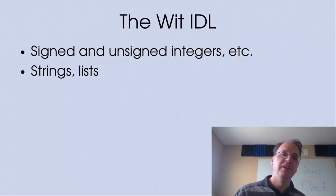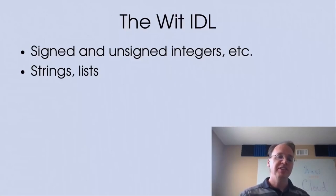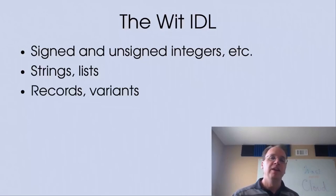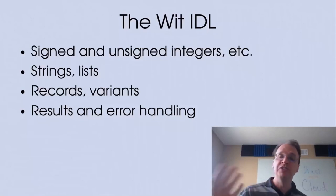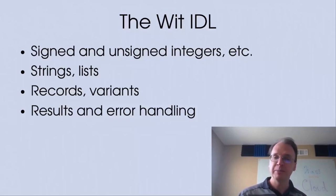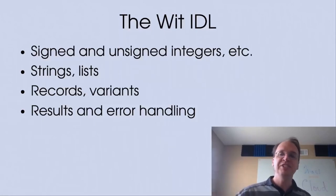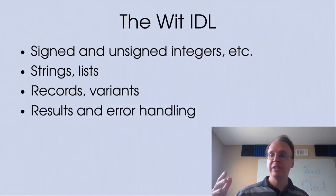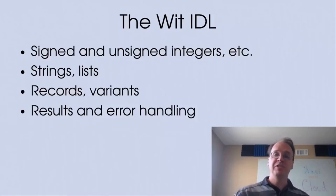The IDL also provides floating point types and Boolean types. These interface types give us dynamically sized types — things like strings and lists — as first-class types we can pass through interfaces, which are very valuable for defining APIs. The IDL also gives us types for records and variants, and a result type for error handling. With bindings to JavaScript, we can have JavaScript throw an exception; with Rust, we return a result; with C, we return a special error number. Every language can have its own natural error handling, and having a result type in the IDL lets us generate specialized bindings for each.